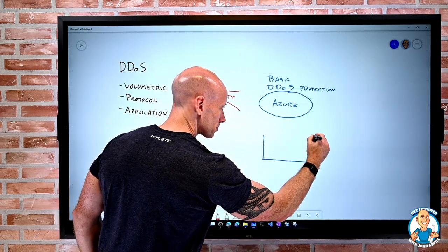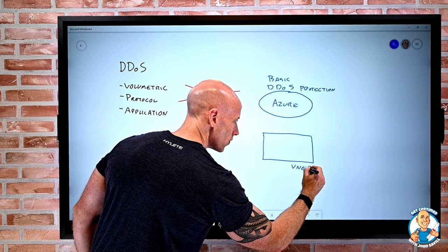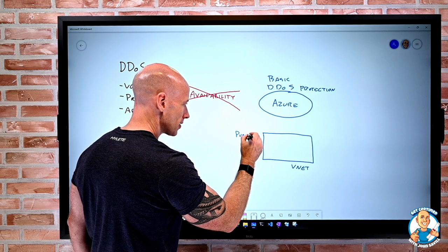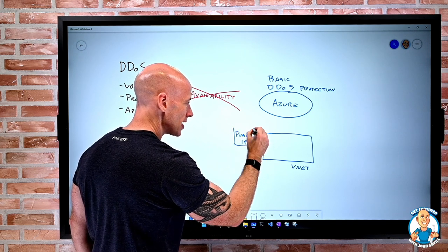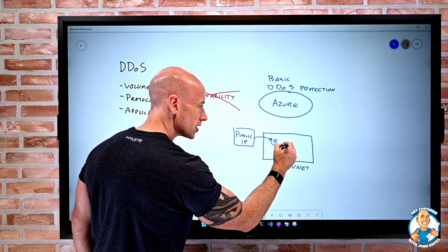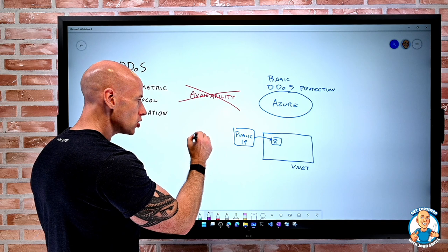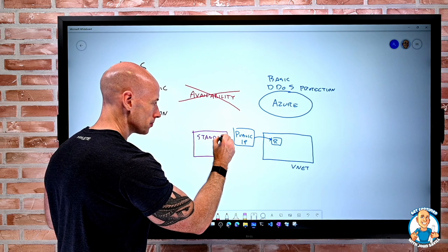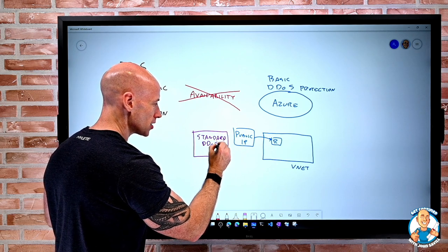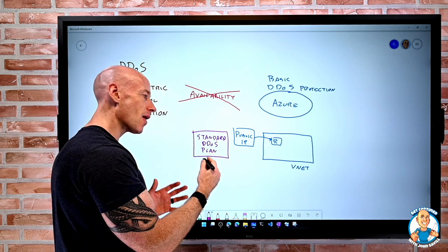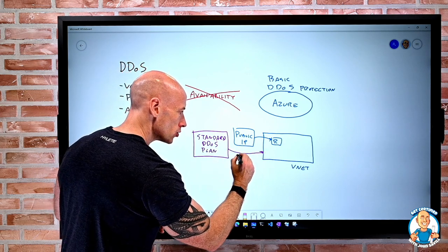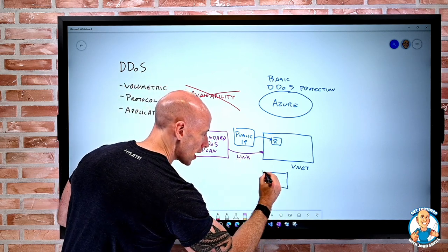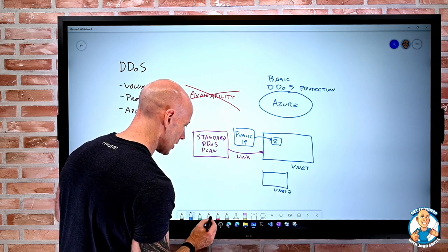Remember, we have a virtual network, and I have resources within that virtual network that may use public IPs. So if I have these public IPs created and are linked to some resource in the virtual network, what I can actually do is I can create a standard distributed denial of service protection plan. And then I can link the plan to a virtual network, and I can actually link it to multiple virtual networks.